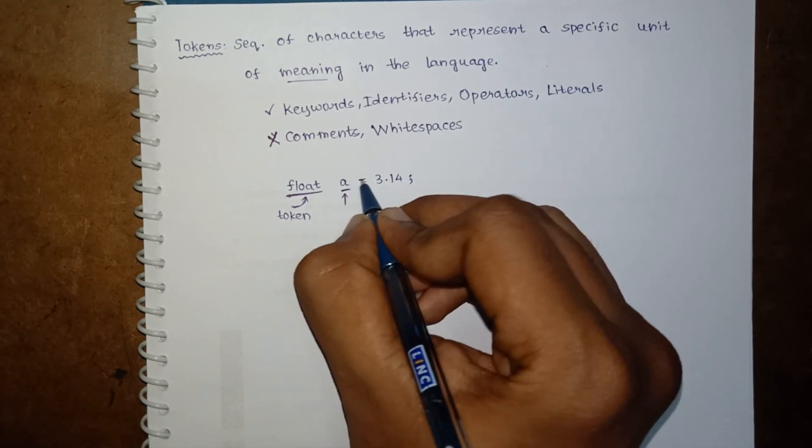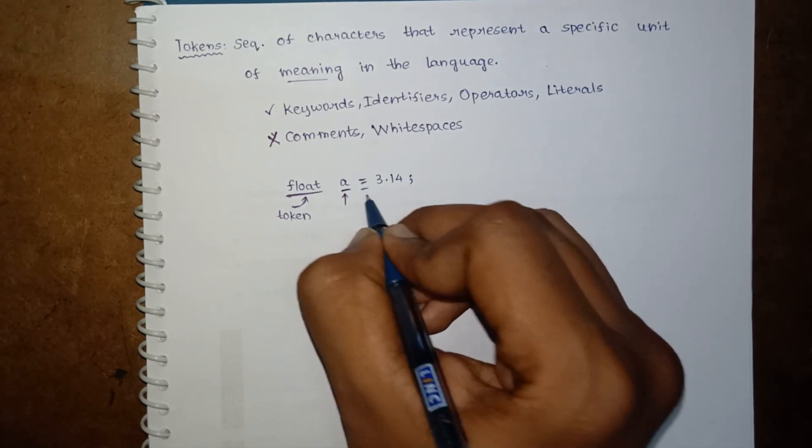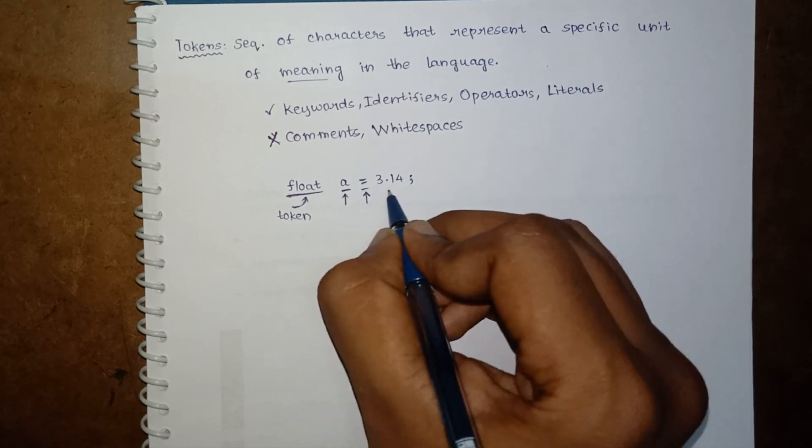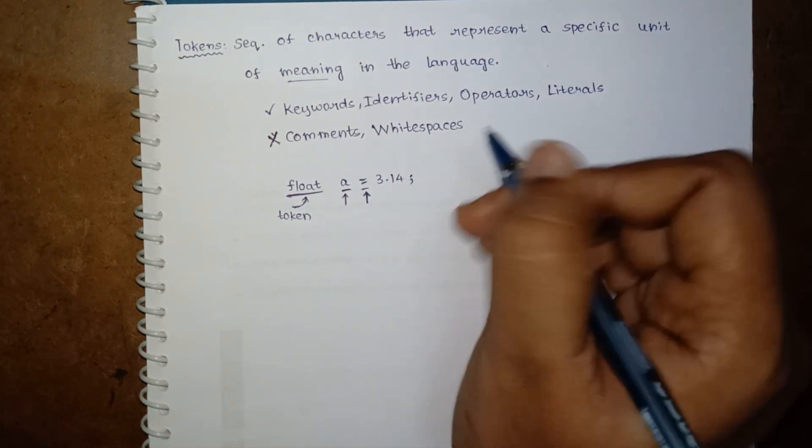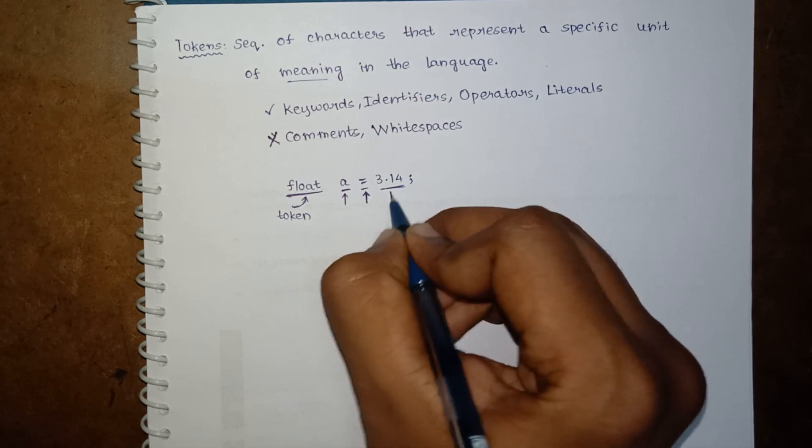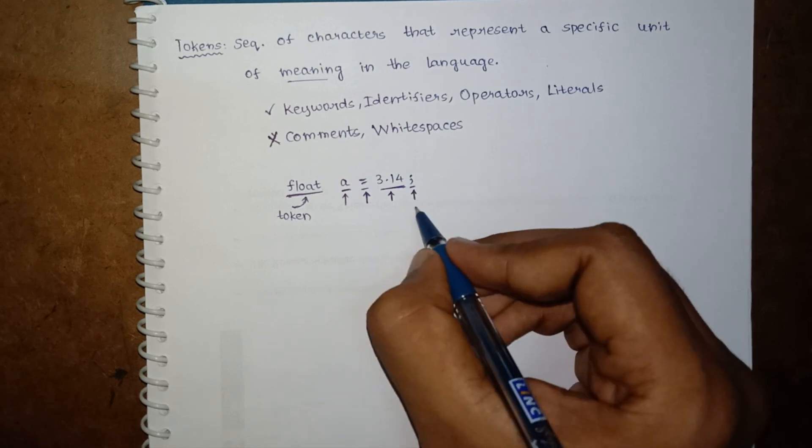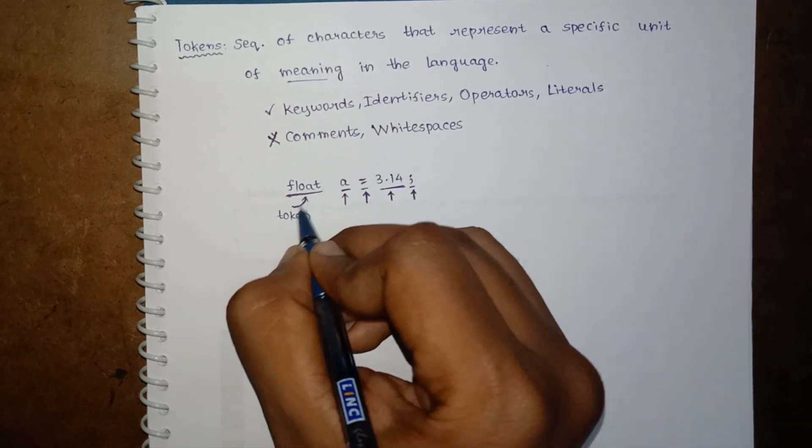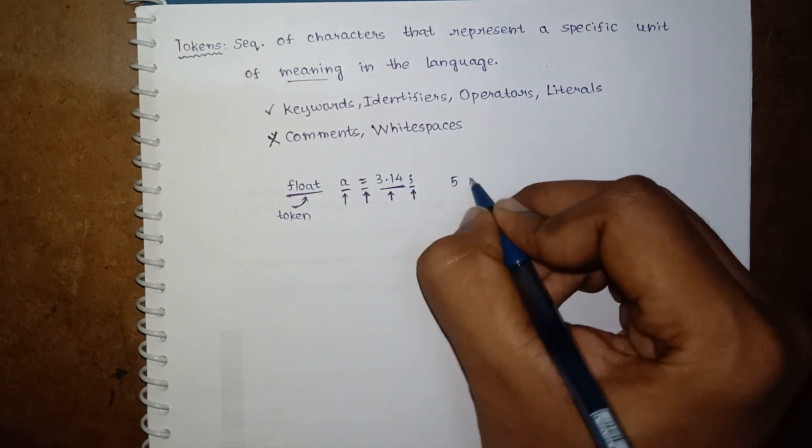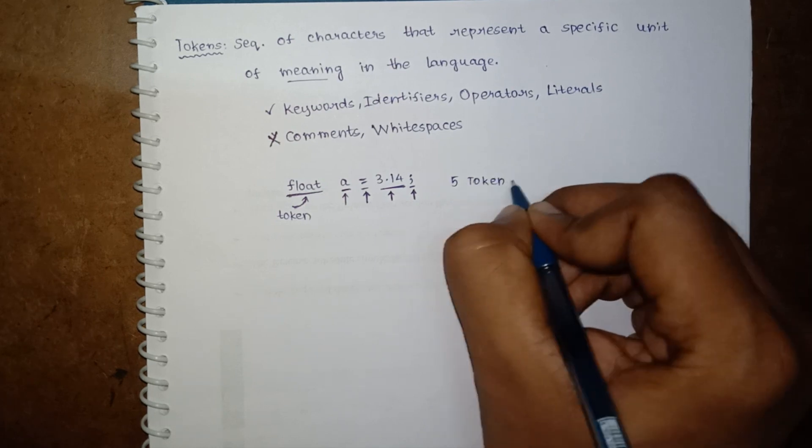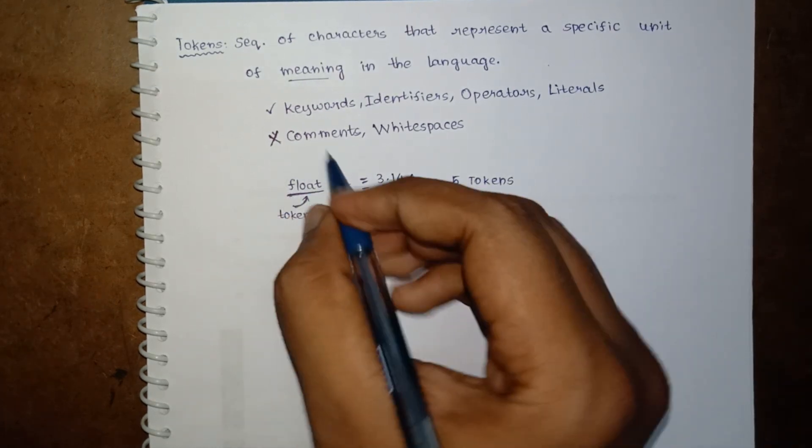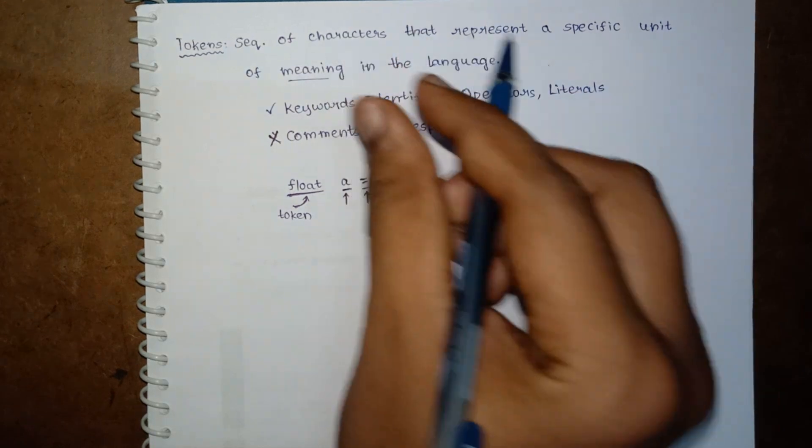Next it is followed by equals, this is one token as well, this is an operator. And this is a constant value, this is one token, and the semicolon at the end, this is a separator, this is a token as well. So in this statement we are having five tokens. Token is nothing but a unit in any language that makes sense, that have some meaning.